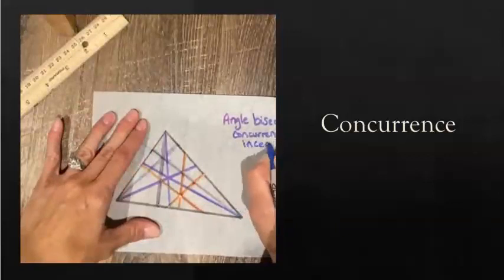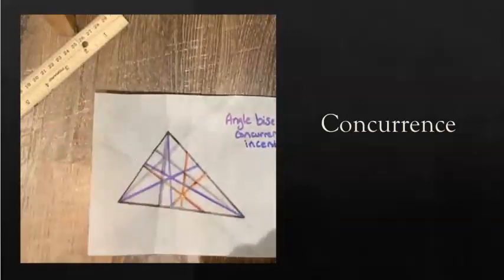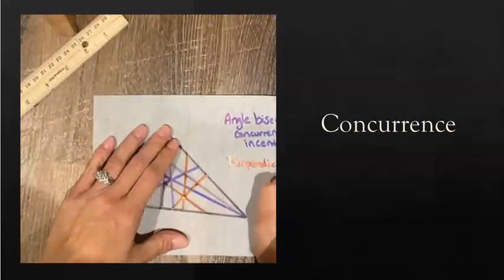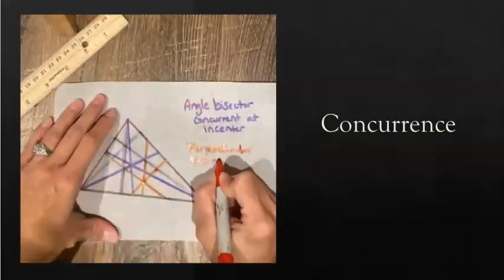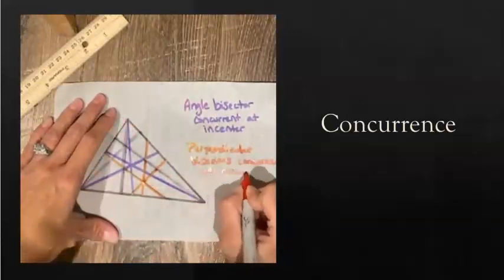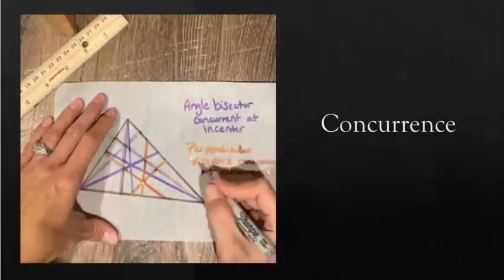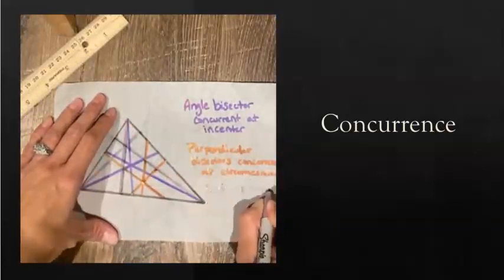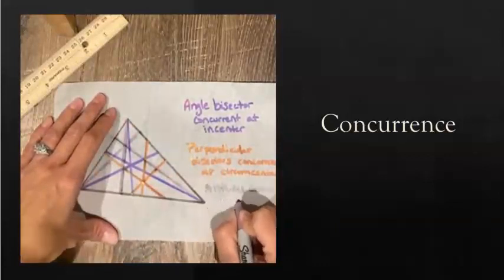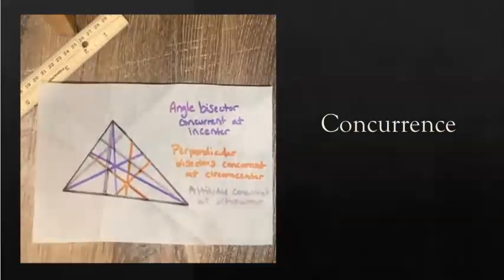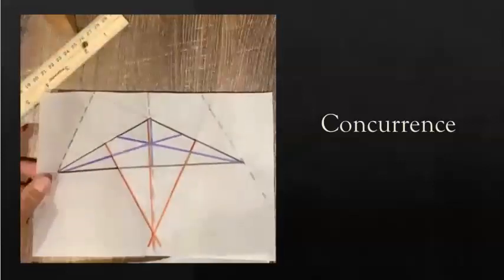So these special points of concurrency: the three angle bisectors intersect and we call that point the in-center, I-N-C-E-N-T-E-R. The point of concurrency for the perpendicular bisectors is the circum-center. And the point of concurrency for the three altitudes is called the ortho-center. So those are three important vocabulary terms: the in-center where the three angle bisectors intersect, the circum-center where the perpendicular bisectors have a point of concurrency, and the ortho-center where the altitudes have a point of concurrency.